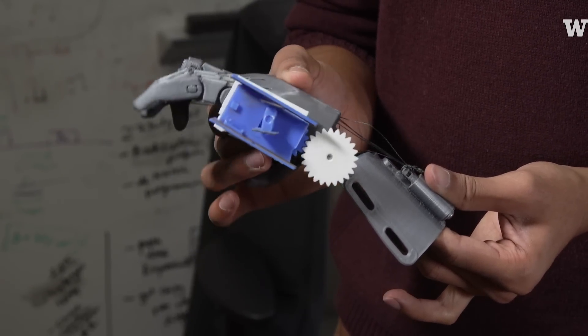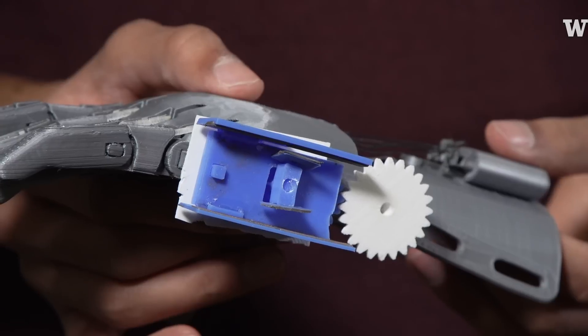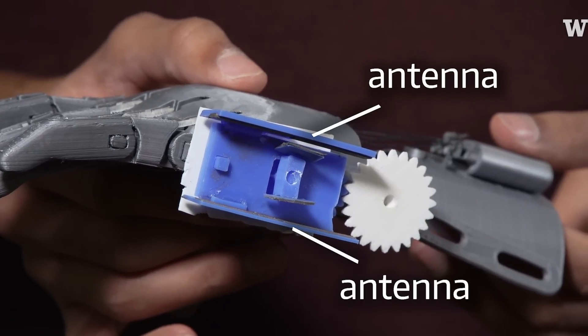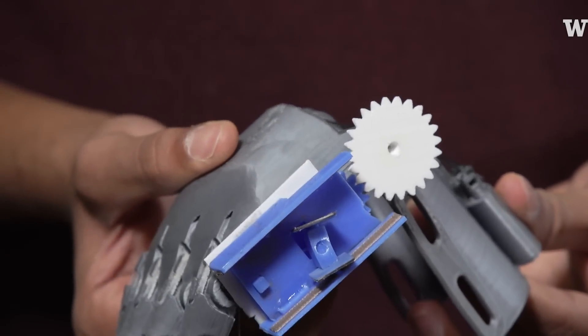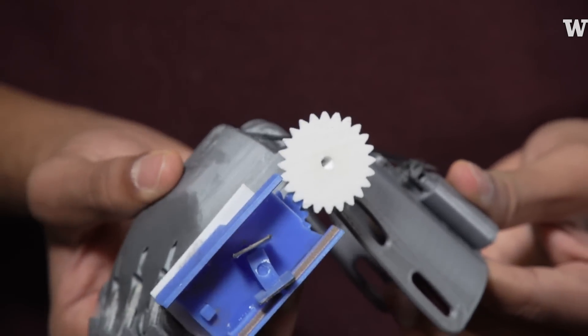As this gear turns in either direction, we actually have two antennas, one on each side, and then there's a switch contact. When it touches the antenna, that changes how that antenna reflects energy.